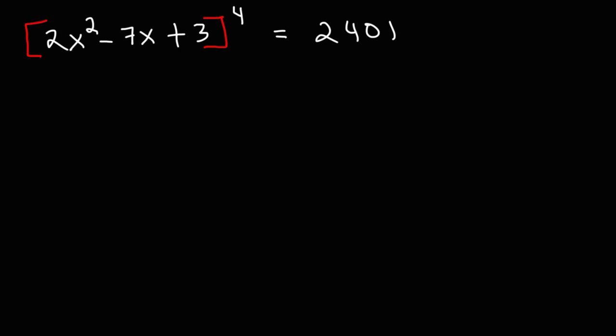Consider this problem: 2x squared minus 7x plus 3, all raised to the fourth power, is equal to 2,401. What is the value of x? Feel free to take a minute and try to solve this problem.